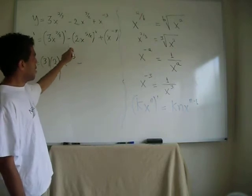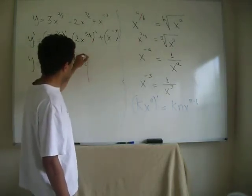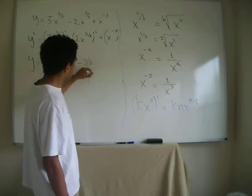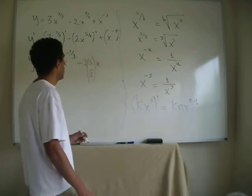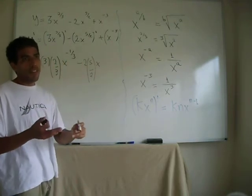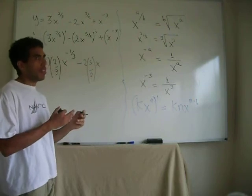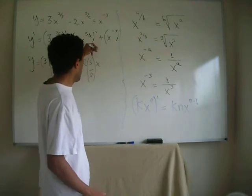Minus five-halves goes down, so we have two. Minus five-halves minus two-thirds, so five-over-two minus two-over-two, so that's three-two, or three-halves.